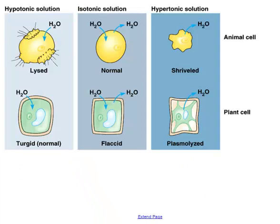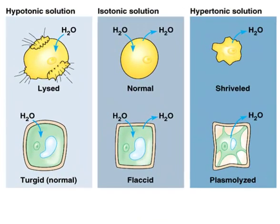What does this mean for living things? Let's look at animal cells and plant cells and see what happens with water. We have three solutions: over on the left, with a very pale blue background, is what's called a hypotonic solution, and over on the right is what's called a hypertonic solution. Let's understand those terms.